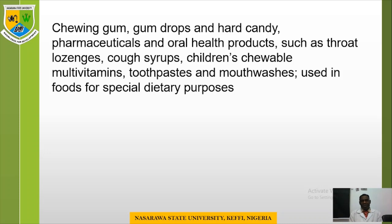Along with adding sweet taste, polyols perform a variety of functions such as adding bulk and texture, providing a cooling effect or taste, impeding the browning that occurs during heating, and retaining moisture in food products. Polyols do not actually prevent browning but they do not cause browning either. Under sugar alcohol or derivatives, common products include chewing gum, gumdrops, pharmaceuticals, and oral health products such as throat lozenges, cough syrups, children's chewable multivitamins, toothpaste, and foods used for special dietary purposes. All of these can be considered and classified under sugar derivatives.